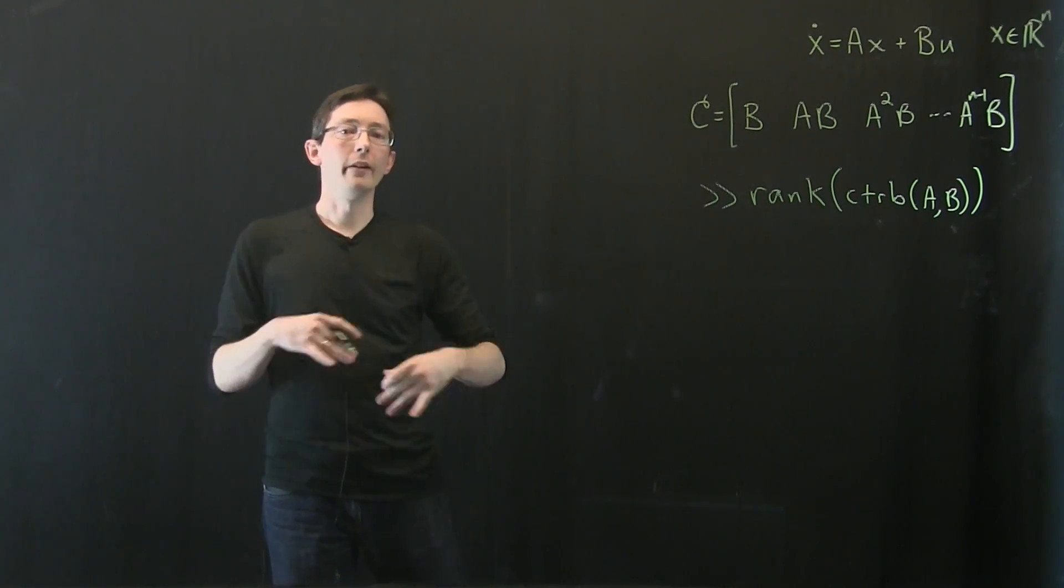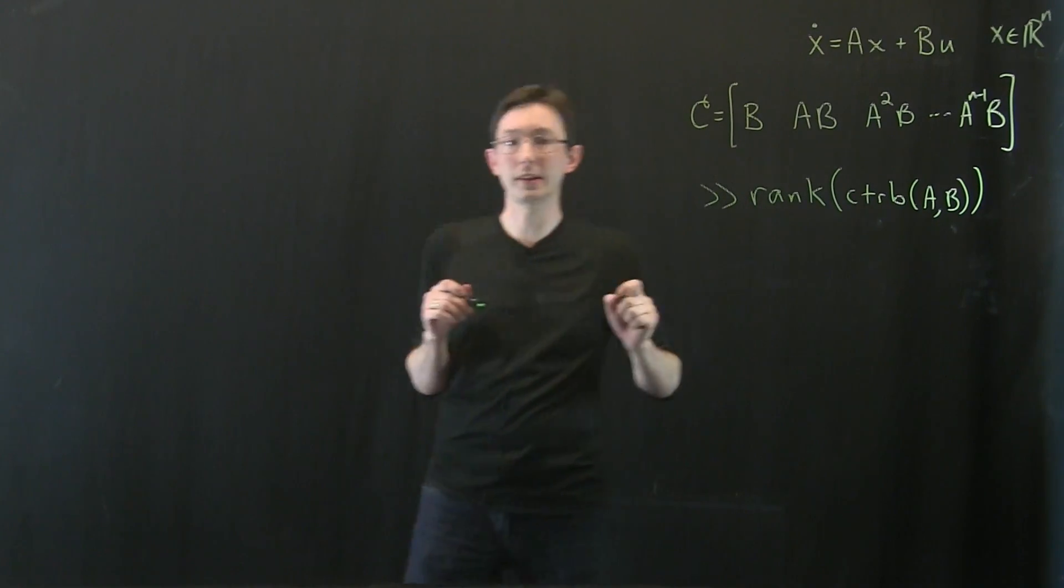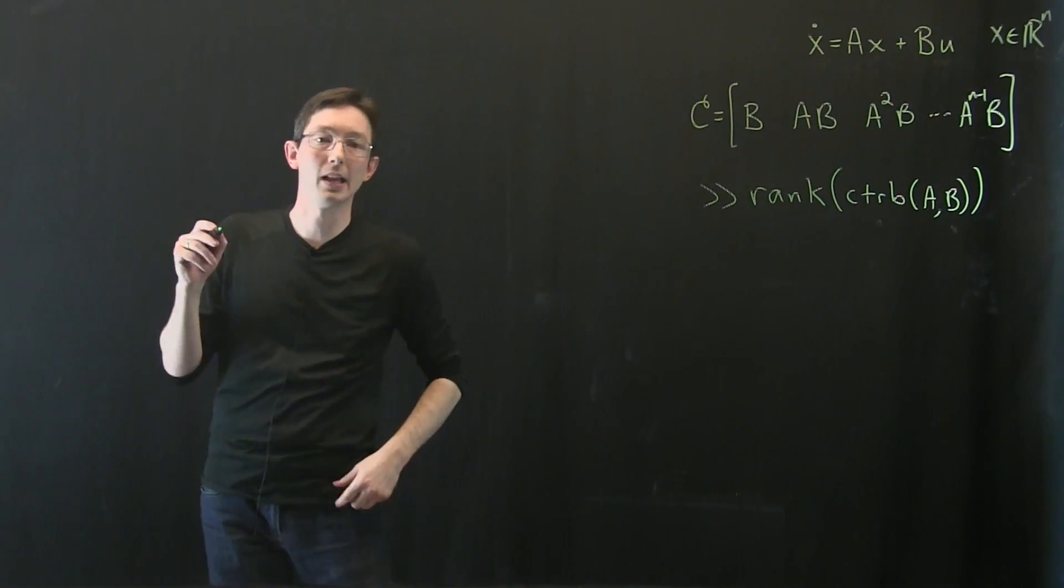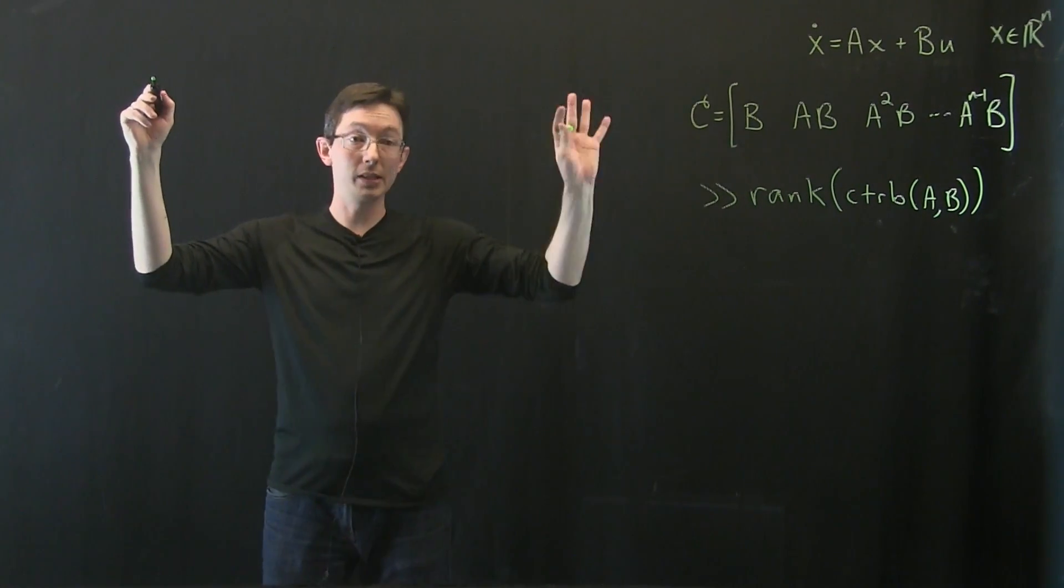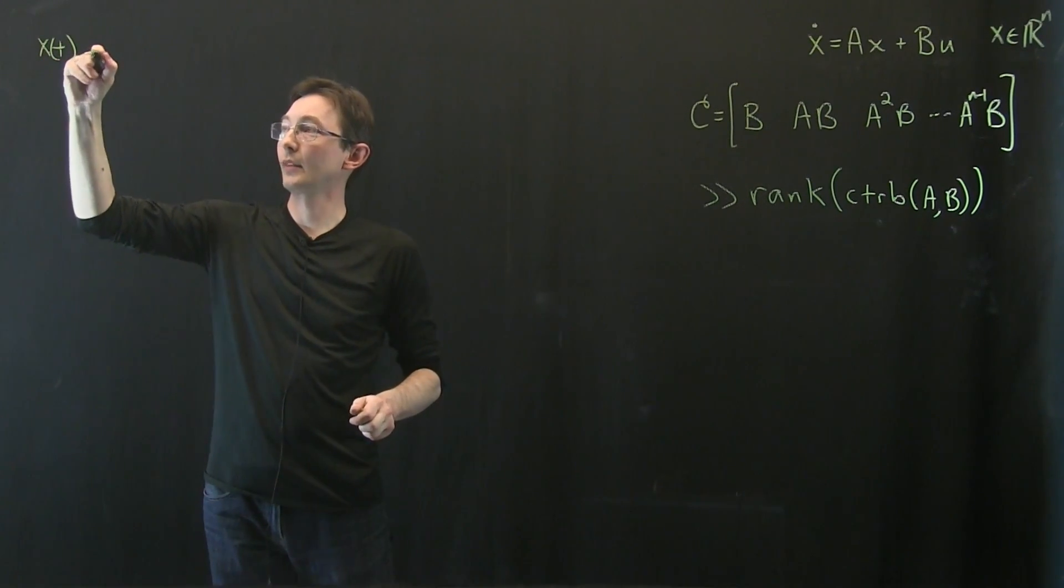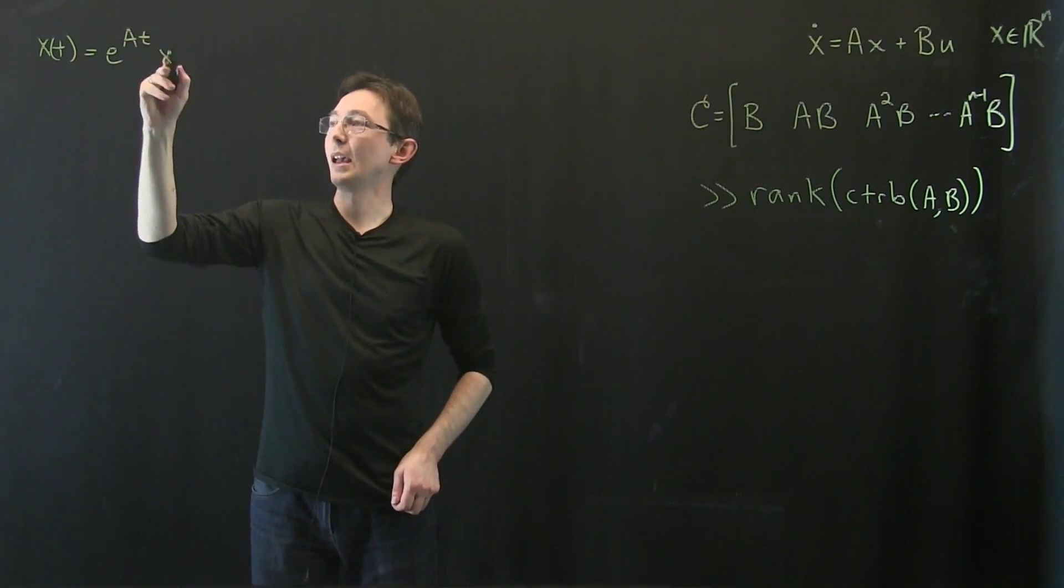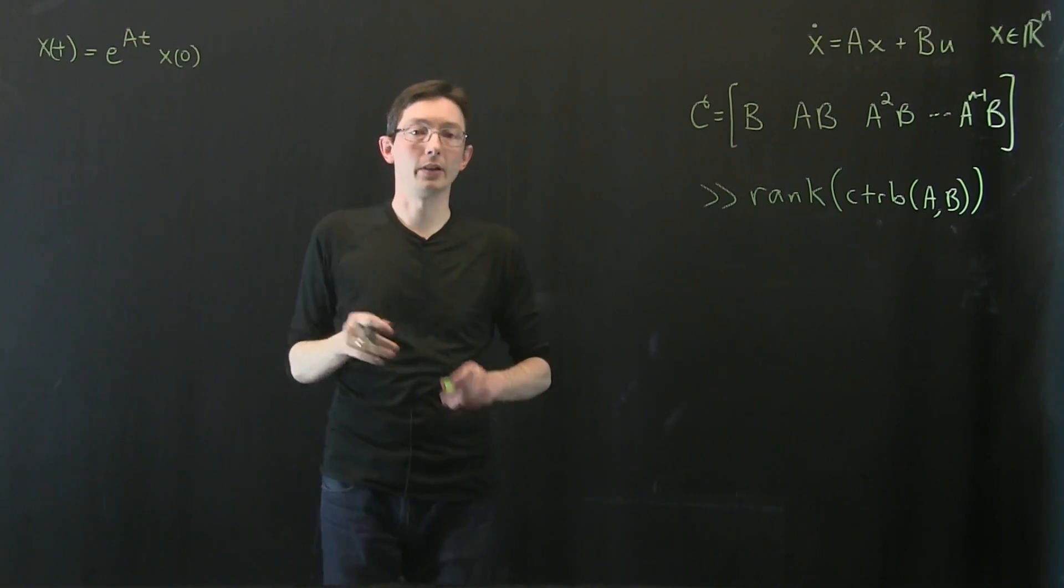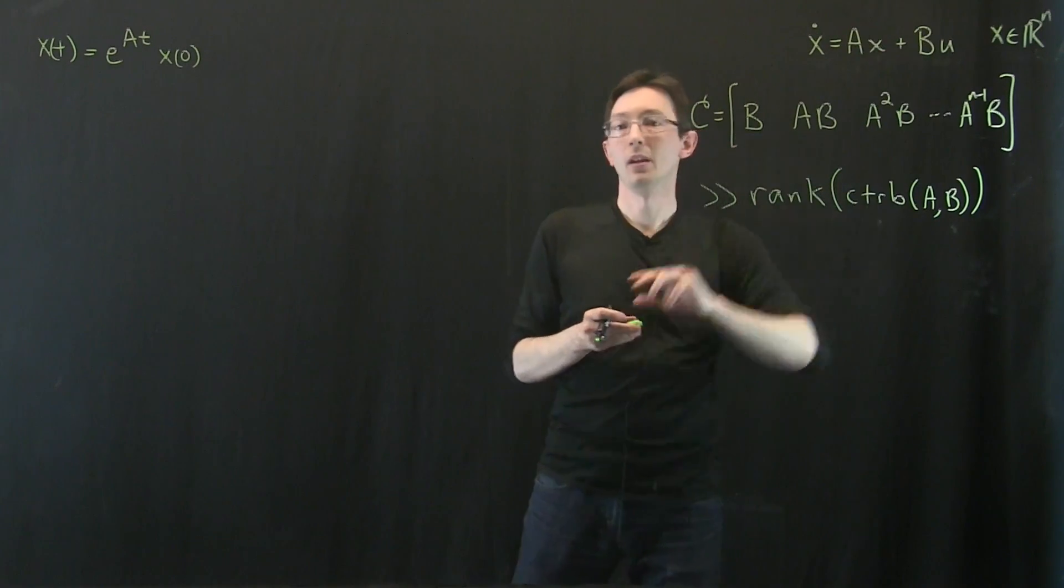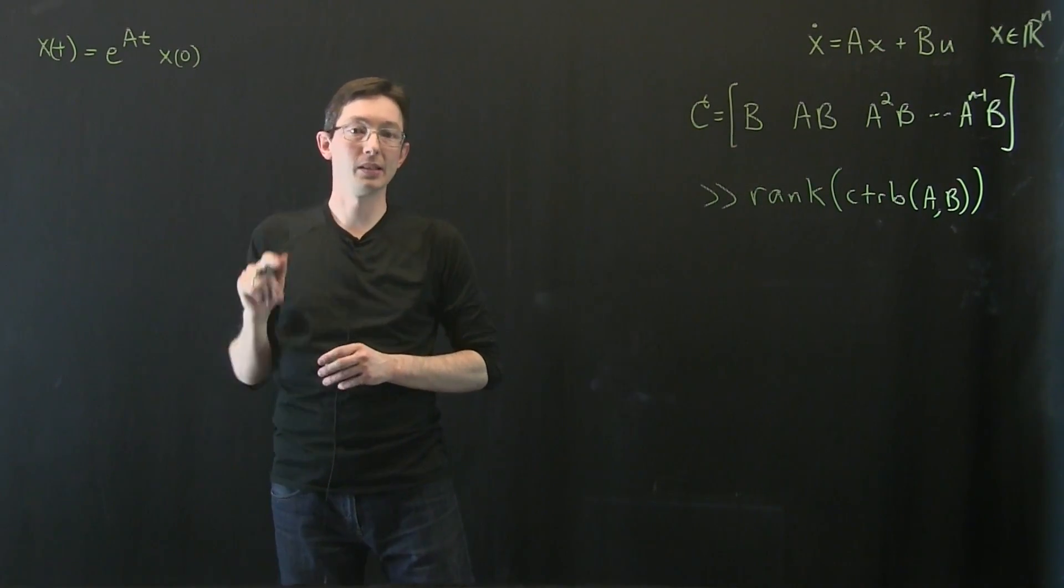So I'm going to write down a few things that we're going to relate. First of all, we know that the solution of the system x dot equals Ax, if we just had an initial condition, we would have x of t equals e to the matrix A t times x at time 0. So in the absence of control, then we would just have this e to the At times initial condition.